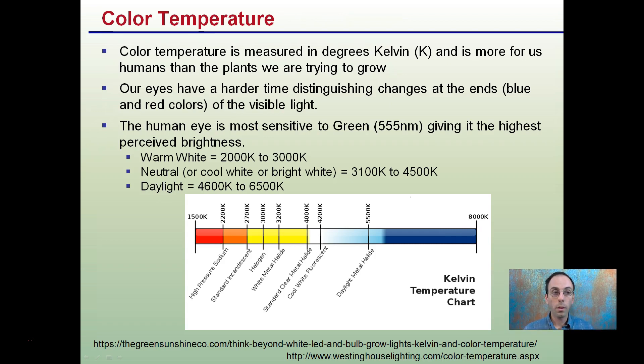Now, color temperature. This is measured in degrees Kelvin. It's more for us humans than the plants we're trying to grow. So a lot of emphasis is put on the Kelvin temperature chart when looking at interior lighting for lighting up a particular room, because our eyes have a harder time distinguishing changes at the ends of the blue and red colors of the visible light. Our eyes are actually most sensitive to green, or 555 nanometers, giving it the highest perceived brightness. These other warm whites, neutrals, or daylights, again, apply more to interior design than it does plants, even though some grow lights will quote the color temperature, it's of little importance to plants.